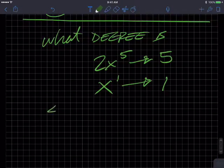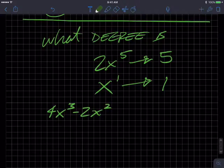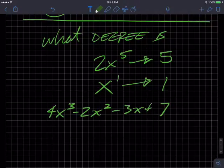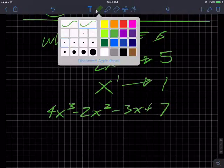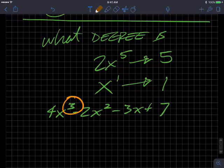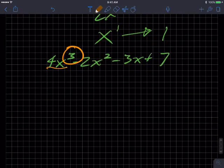What is the degree of this polynomial? Four X cubed minus two X squared minus three X plus seven. We already kind of covered this. You should tell me that it is three. Oops. Three based on that term that has the highest degree, which is three.